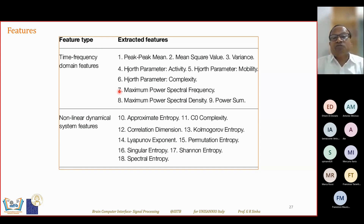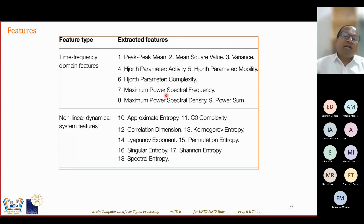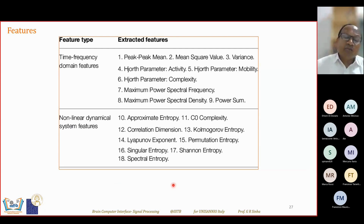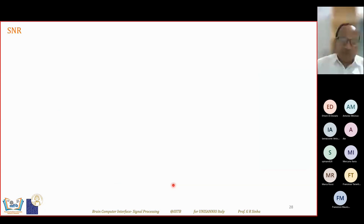Features include time-frequency domain features such as peak-to-peak, mean value, mean square value, variance, Hjorth parameters (activity, mobility, complexity), maximum power spectral frequency, maximum power spectral density, and average power. Wavelet features — wavelet coefficients from different wavelet families — are also extracted. Non-linear dynamic features include approximate entropy, complexity, correlation, Kolmogorov entropy, permutation entropy, singular entropy, and spectral entropy. There are hundreds of different features extracted from brain signals using appropriate signal processing.